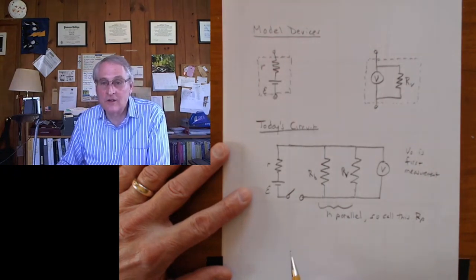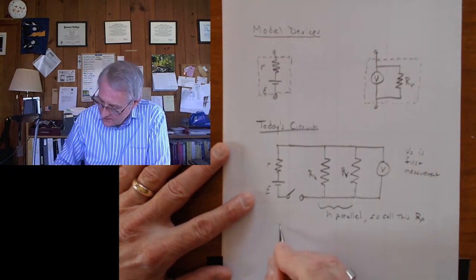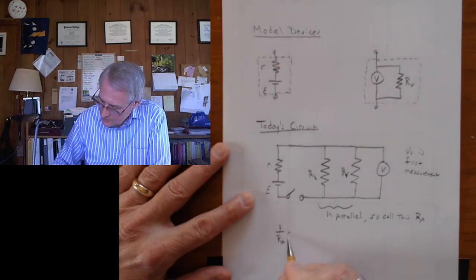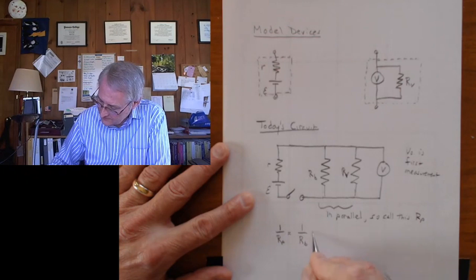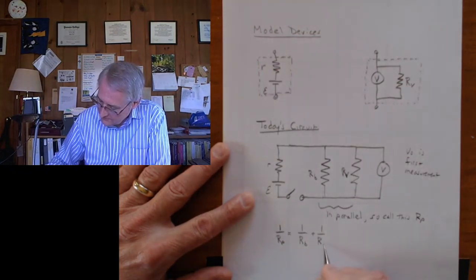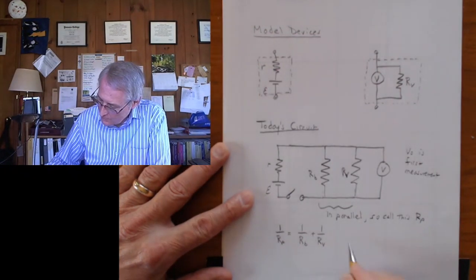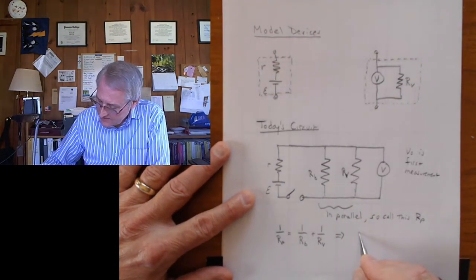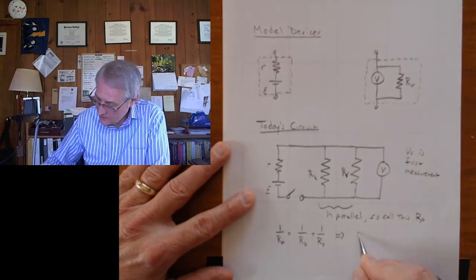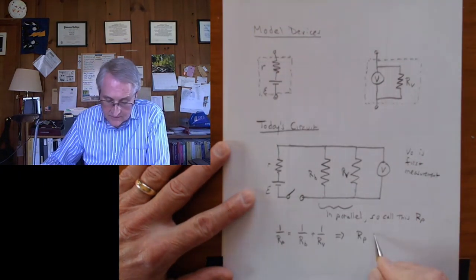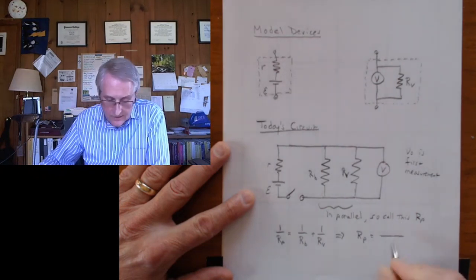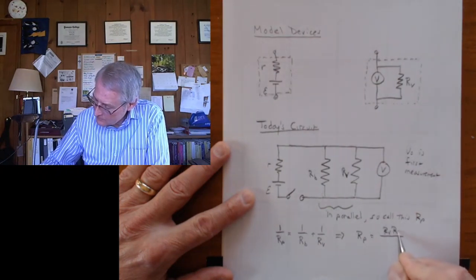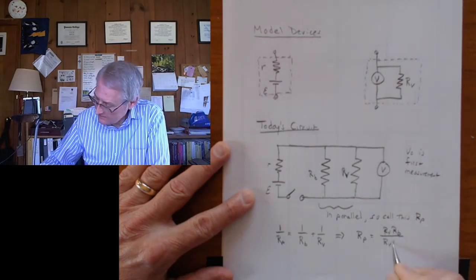The rule for resistors in parallel, 1 over the resultant resistance of both is 1 over 1 of them, the resistance of the box, plus 1 over the internal resistance of the voltmeter. If you solve this, and that's one of your tasks also, a derivation, you will get, this is one of the equations in the handout, and you've got to do the algebra. It's not hard. The product of the two divided by the sum of the two.